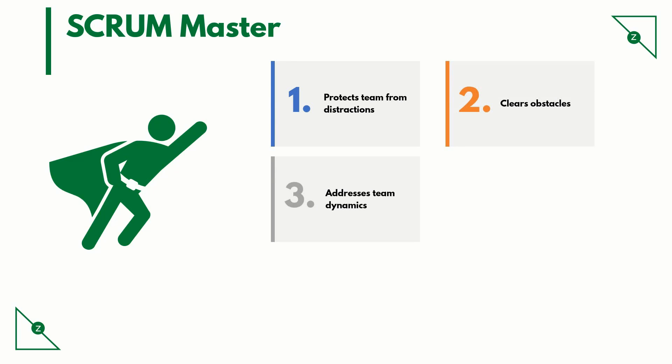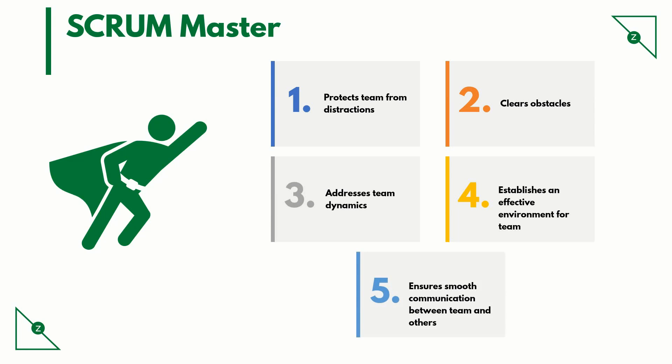The scrum master addresses team dynamics. As the team runs at a fast pace, there is a lot of room for conflicts. A scrum master should be resolving conflicts both at a team level and at an individual level. He establishes an effective environment for the team — whether it may be infrastructure, team dynamics, communication plan, or process — the team must have an environment where they are highly efficient and productive. The scrum master also ensures smooth communication between the team and other stakeholders, acting as an interface and moderator, whether discussing with the IT team or demonstrating sprint work to business users.